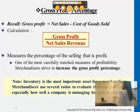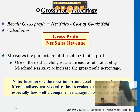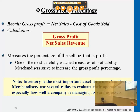We divide gross profit by the total net sales. Overall, this will tell us that for every dollar of sales that we make, how much gross profit the company is earning. So if the gross profit is 50 and the net sales revenue is 100, then you're getting 0.5 — for every dollar of sales, you're getting 0.5 of gross profit.